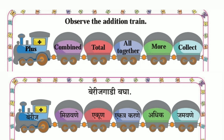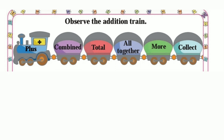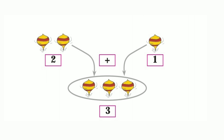We will learn about berries. On one side we have two tops, and on another side we have only one top. So together we have three tops.